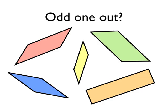Which of these shapes is the odd one out, and why? Pause the video and give yourself a minute to decide which of these shapes is the odd one out, and it's important that you come up with a reason for deciding why.